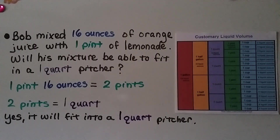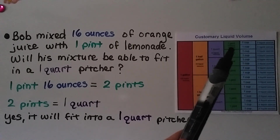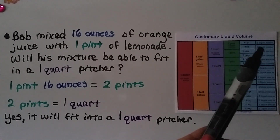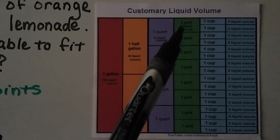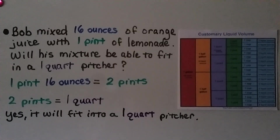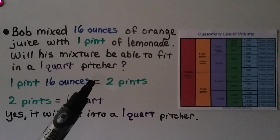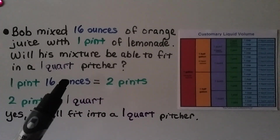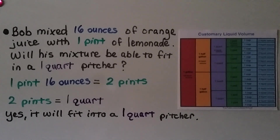Bob mixed sixteen ounces of orange juice with one pint of lemonade. Will his mixture fit in a one-quart pitcher? There are eight ounces in one cup and two cups in a pint — so sixteen ounces equals one pint. That means he mixed a pint of orange juice with a pint of lemonade. Sixteen ounces equals one pint, and two pints equal one quart. So yes, it will fit into a one-quart pitcher.